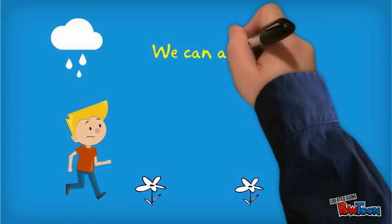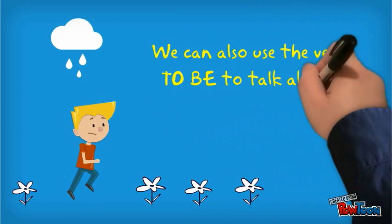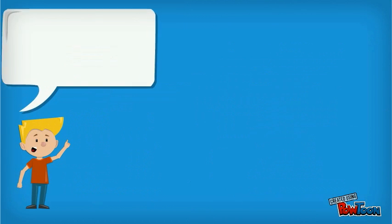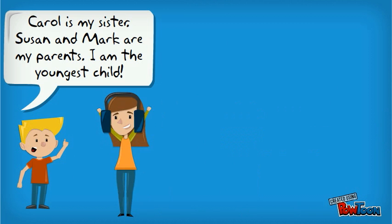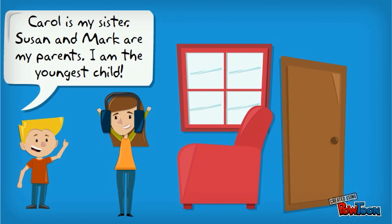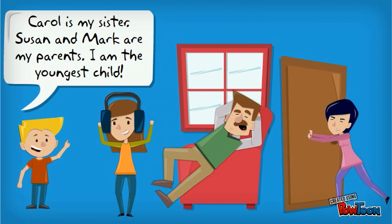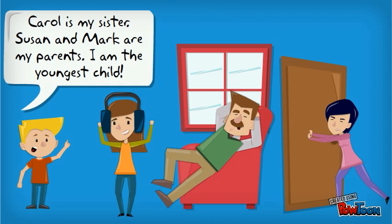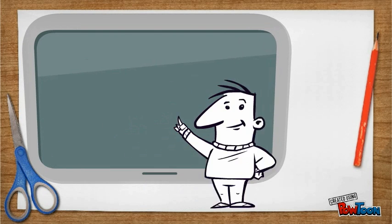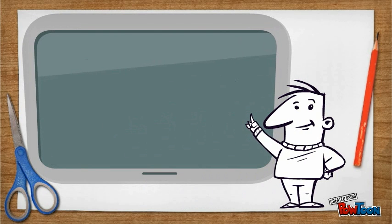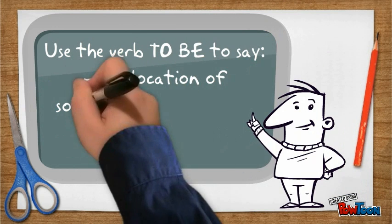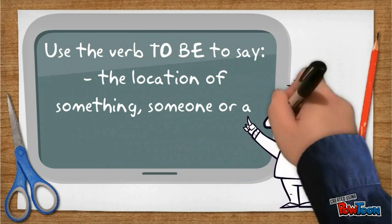We can also use the verb TO BE to talk about family. Use the verb TO BE to say the location of something, someone, or a place.